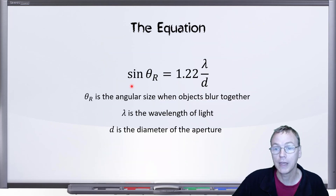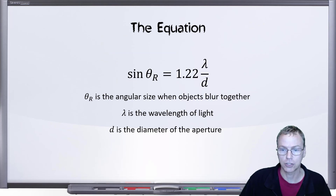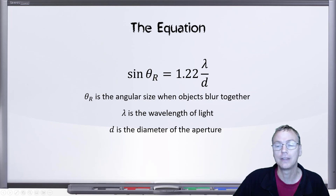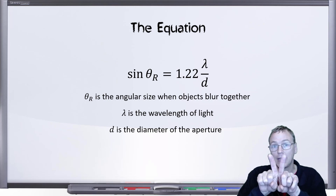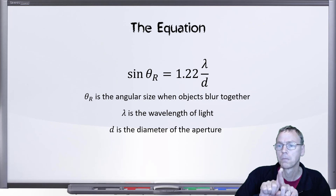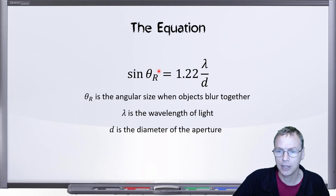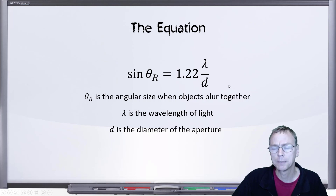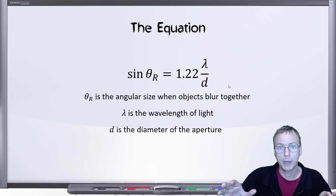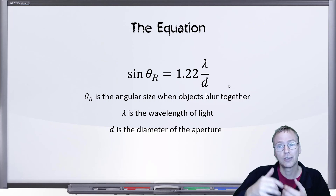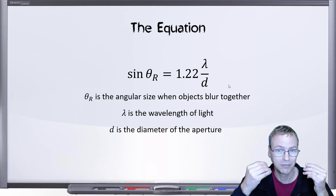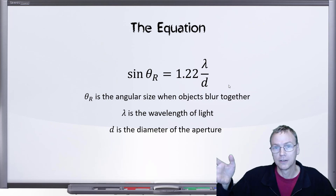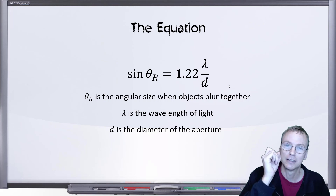If we move those two closer together, they're going to start to merge and appear to be a single dot. This is the equation for the angle when that occurs. So this angle theta sub r is the angle of separation between the two light sources. If the two light sources get any closer together than that, they will blur together. And this lambda on top is the wavelength of the light. The diffraction pattern and the size of the diffraction pattern is proportional to the size of the wave, so lower frequency or longer wavelength light diffracts wider than smaller waves of the higher frequency light.